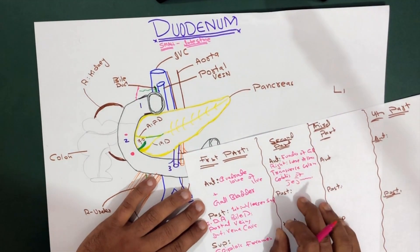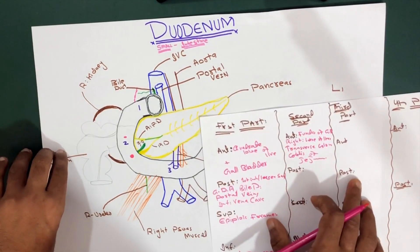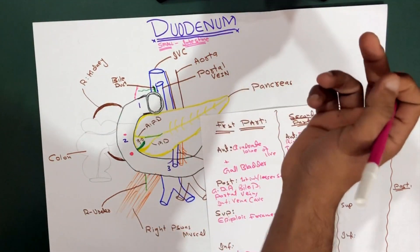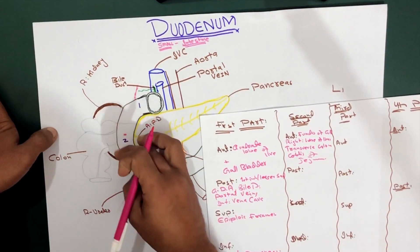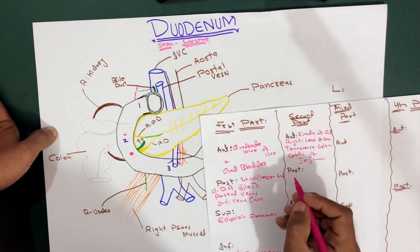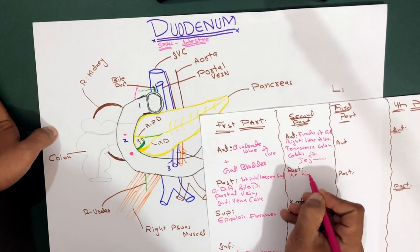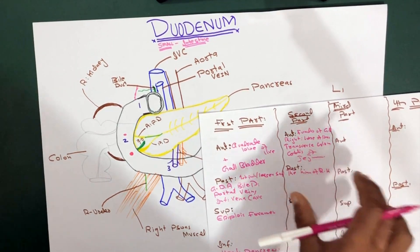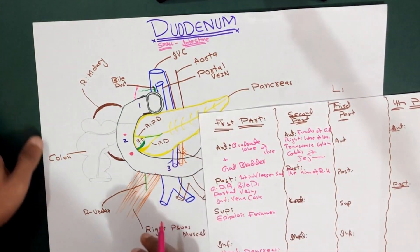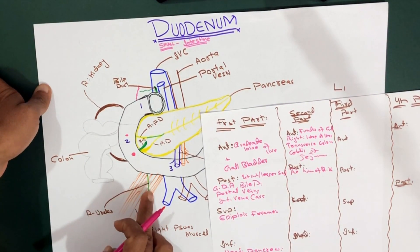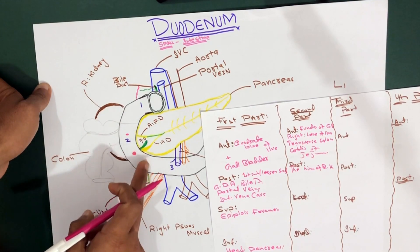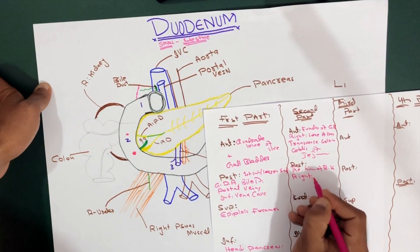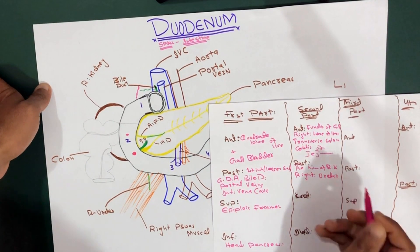Now let's talk about the posterior structures of the second part of the duodenum. Posteriorly, it is very simple. We have the hilum of the right kidney, which is posterior to the second part. We also have the right ureter - you can see it coming out of the hilum and going down - so the right ureter is also posterior to the second part of the duodenum.